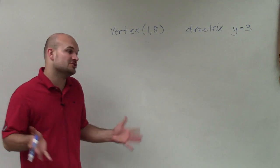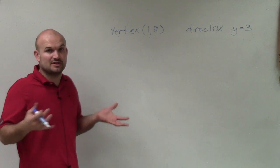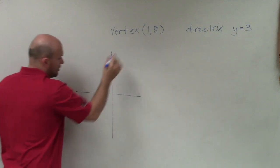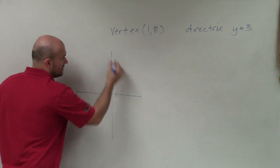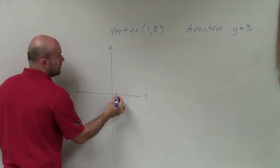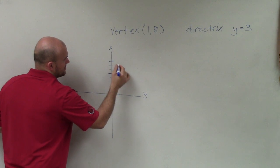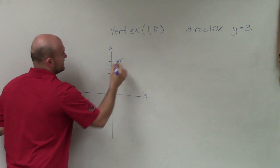So to do that, what I'm first going to do is just rewrite the information that I'm provided. So I have a vertex at (1, 8). So I'm going to go over 1, and then that's x, that's my y. So I'm going to go over 1, up 8: 1, 2, 3, 4, 5, 6, 7, 8. OK, I'm going to write that in as my vertex.